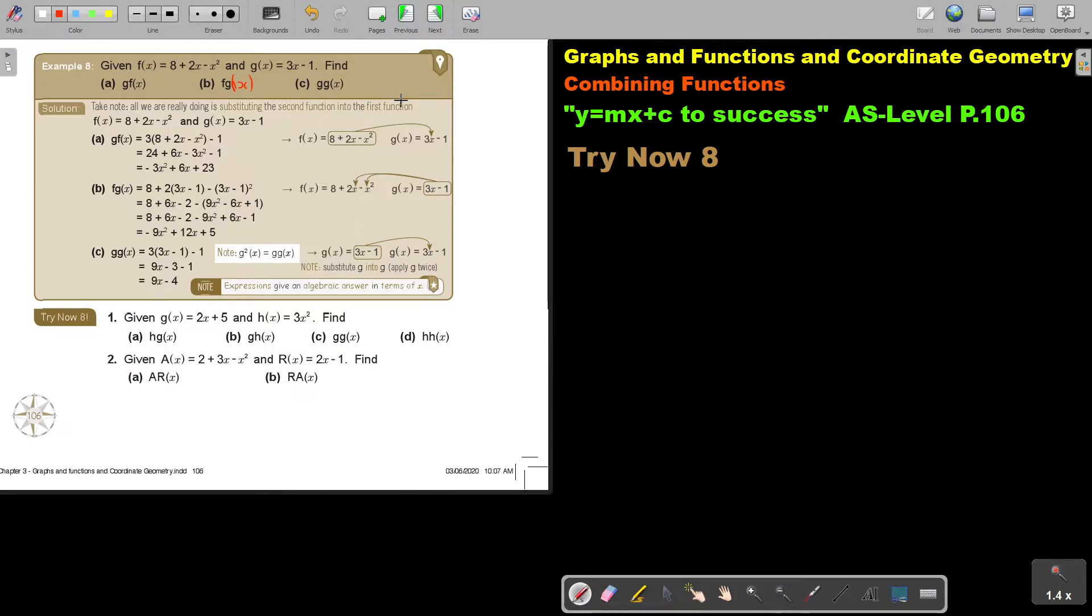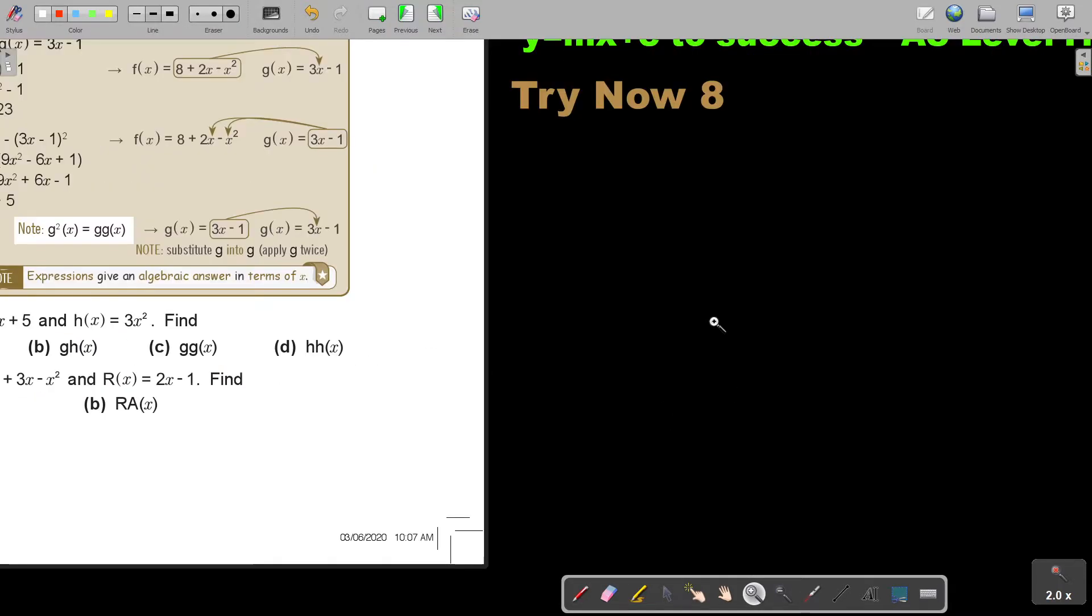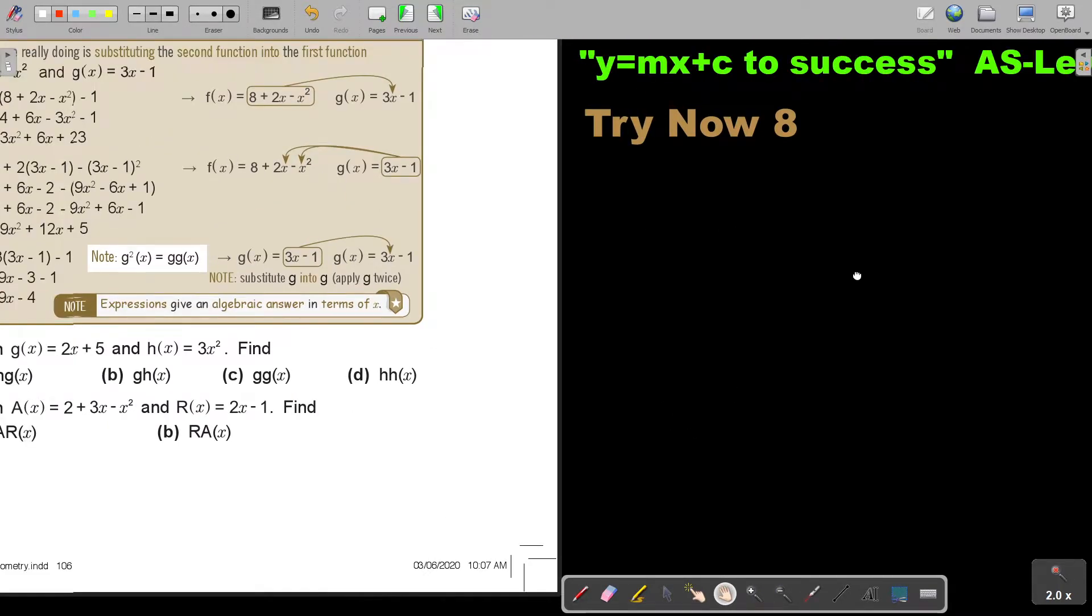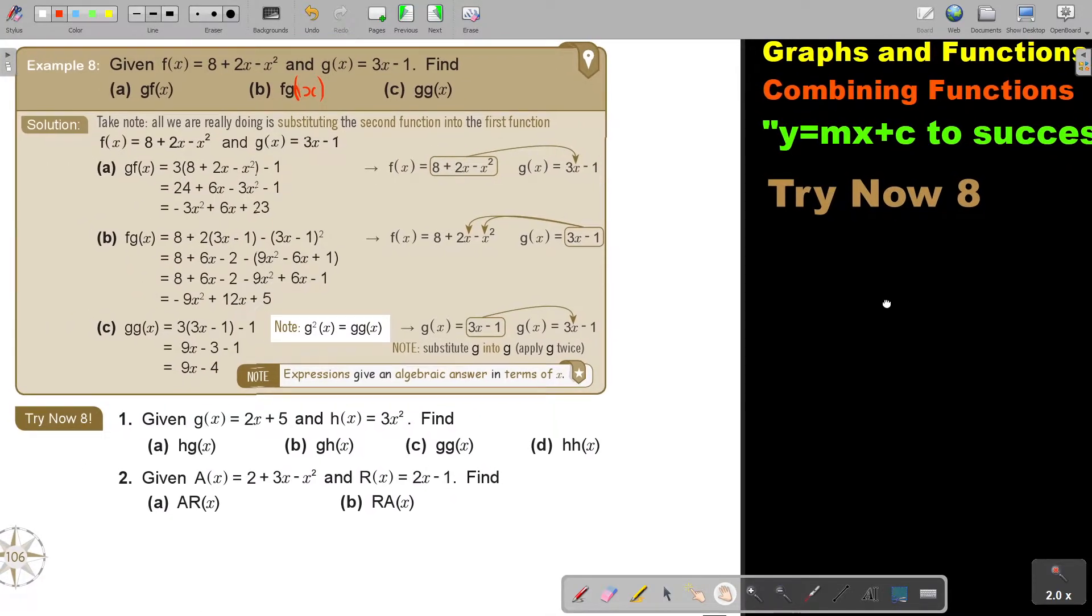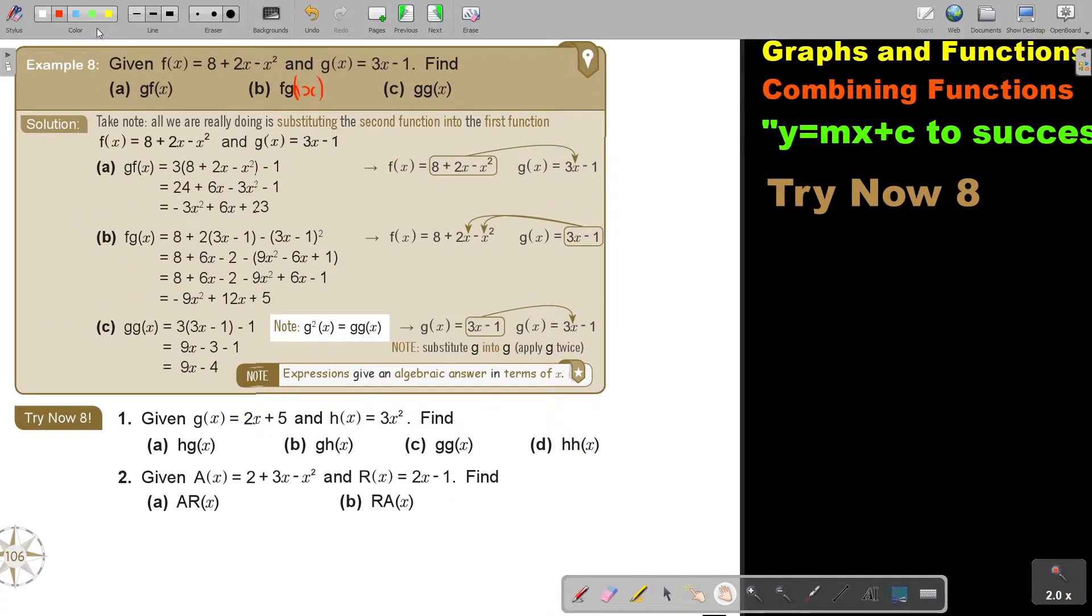So I always, especially in the beginning, if you struggle a little bit, I like to make use of arrows. So if you will see, if I say f, then go to f. Take f and throw it into g in the place of x. So start rewriting there. So 3, then you throw in that bracket, minus 1, and then you just simplify.